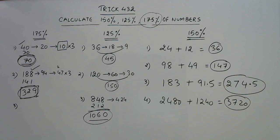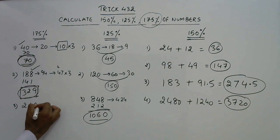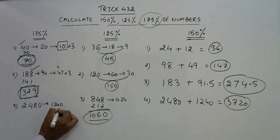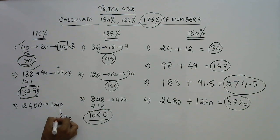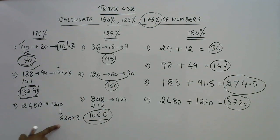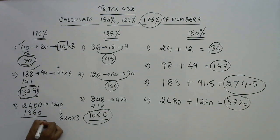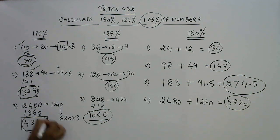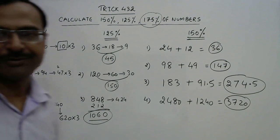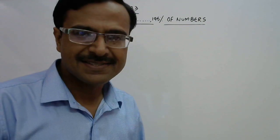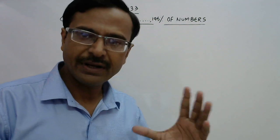For a larger number, say 2480: half is 1240, half again is 620. Multiply 620 by 3 to get 1860. Add 2480 and 1860 to get 4340. So 4340 is 175% of 2480.